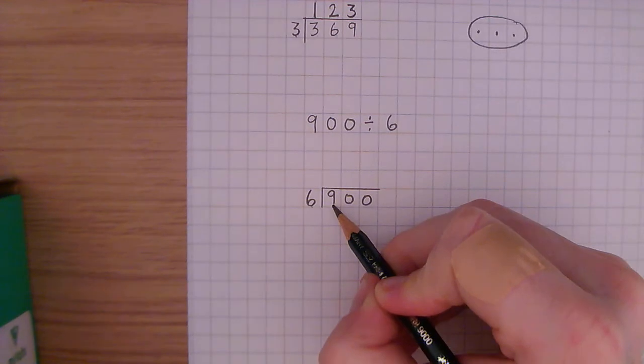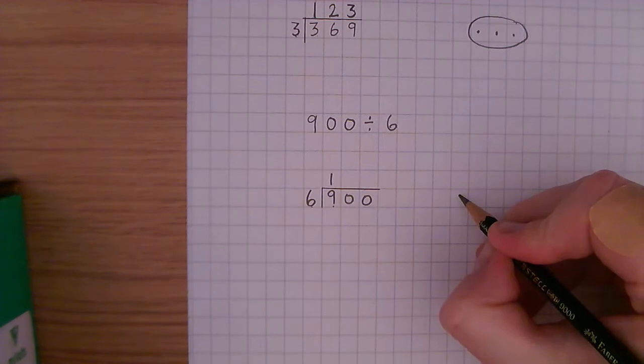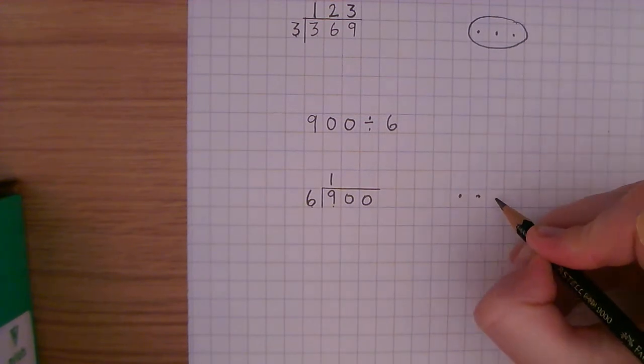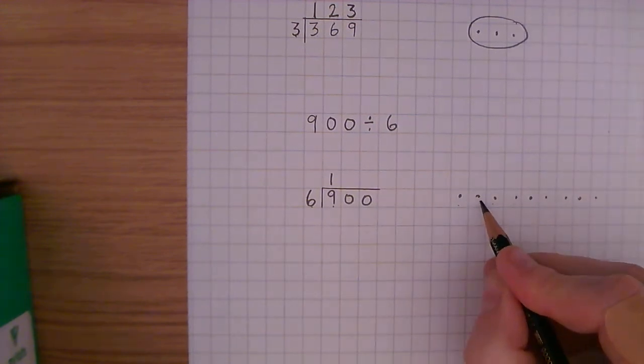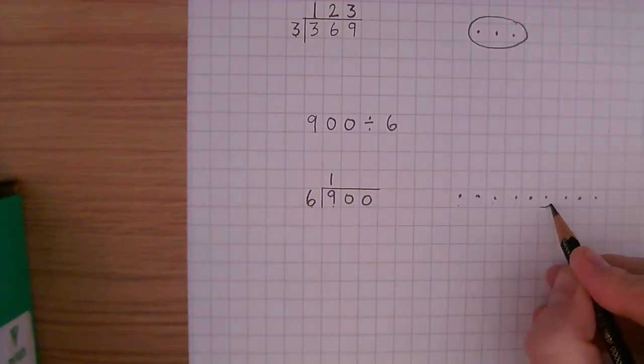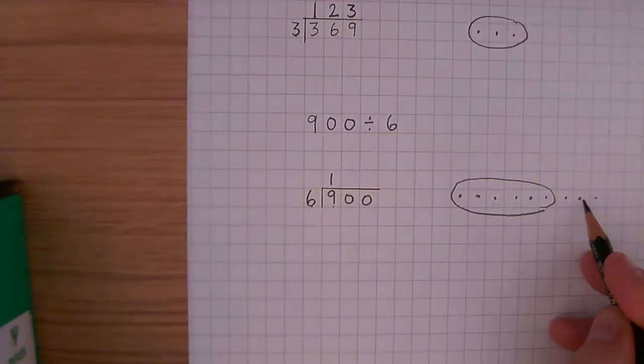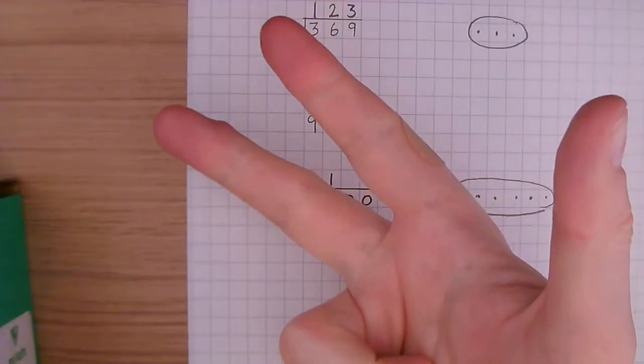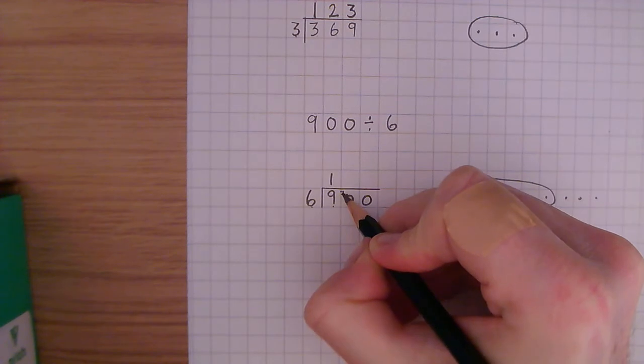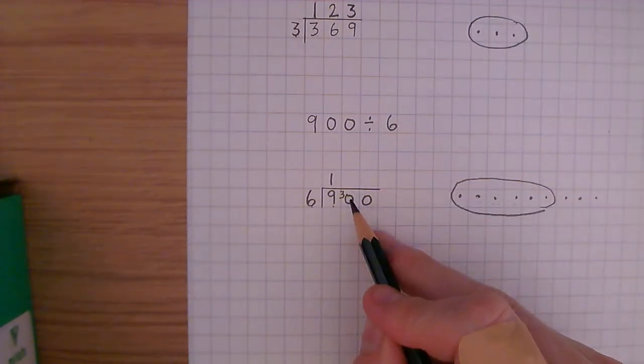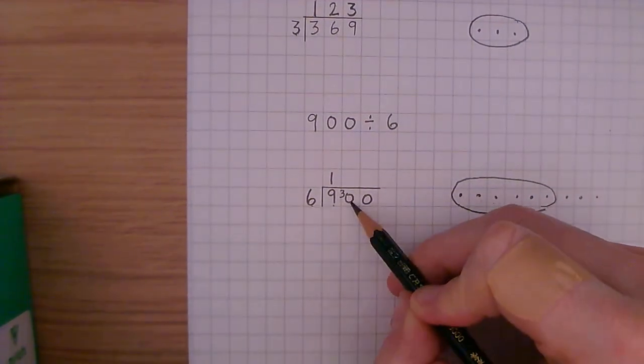How many 6's go into 9? 1, because if I drew out 9, 1, 2, 3, 4, 5, 6, 7, 8, 9. There's my 1 group. Now, my remainder, 7, 8, 9, goes here, on the shoulder of this 0 here. So then our next question is, how many 6's go into 30?